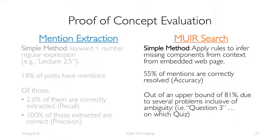In our second component, we've devised a way of doing MIR search. The idea is to generate a transparent URL and then resolve the mention to its actual component, introducing extra context from the embedded webpage. For example, a mention like 2.5 by itself doesn't help us resolve which video needs to be hyperlinked unless we know which course and which week we're referring to. Using this method, we're able to resolve 55% of mentions accurately, out of an upper bound of 81%, since there are problems like ambiguity — for instance, if a mention says question three but that week has several different quizzes all of which have a question three, it's ambiguous which quiz is being mentioned.